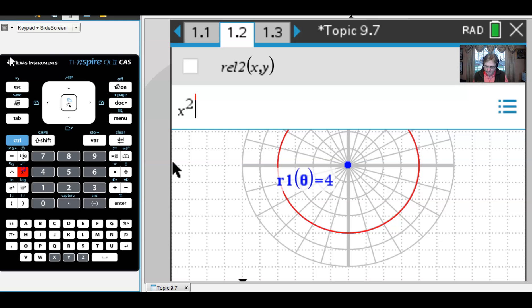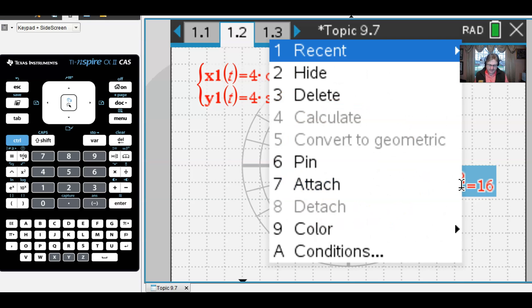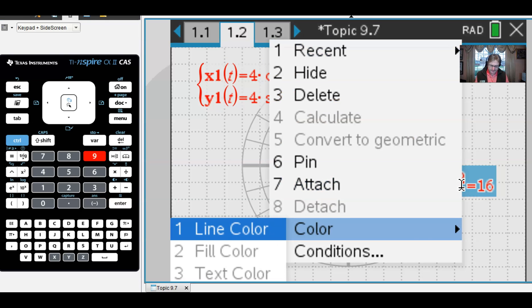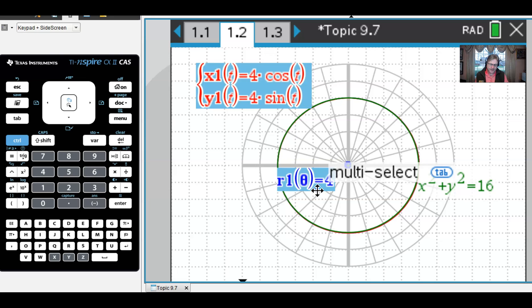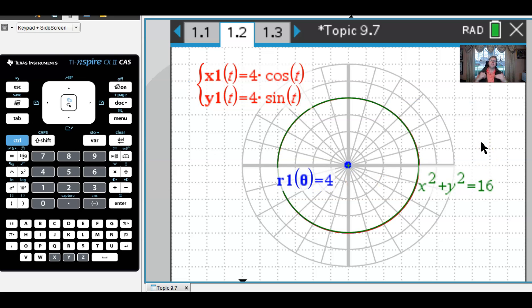There we have it, those are our two graphs. Now if I were to go back in here to graph entry and graph relation, remember we had x squared plus y squared equivalent to 16, which is yet another curve. Let's make this guy green. We can see that boom, they're all the same graph, right? No matter which form you think of it in, we have the same equation. That's one of the things that I like my students to see and make these connections, that polar and parametric and rectangular all have these equivalences.